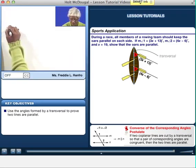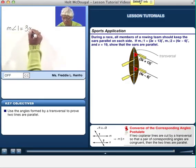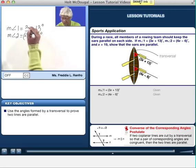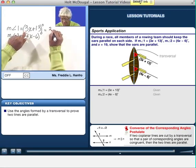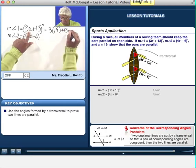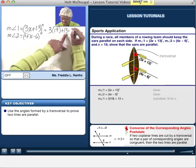Angle 1, the measure of angle 1 is equal to 3x plus 13 degrees. And the measure of angle 2 was equal to 4x minus 6 degrees. Well, they gave us a value for x. They're saying where x is equal to 19. So what I'm going to do is I'm going to substitute in place of x, 19, and simplify that. 3 times 19 is 57, plus 13. That's 70 degrees.